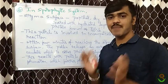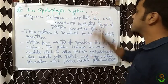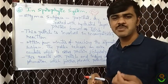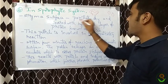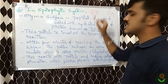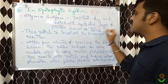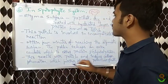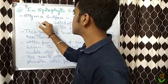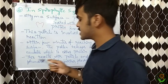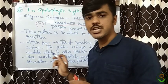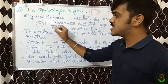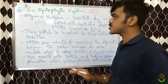In the sporophytic system, the stigmatic surface is papillate — nipple-shaped. This surface is dry and covered with a hydrated layer of protein. Such a layer is called a pellicle. This pellicle, this hydrated protein layer, is responsible for the interactions under this system and is involved in the incompatibility reactions.